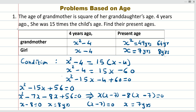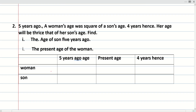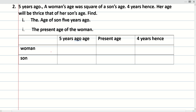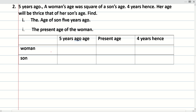Did you understand that sum? It was simple — you just need to understand how to make the table. Now let us tackle one more sum. Five years ago, a woman's age was the square of her son's age. So we are dealing with a reference point of 5 years ago and also 4 years hence. Let us take the son's age as x, so the woman's age will be x squared — this is 5 years ago.